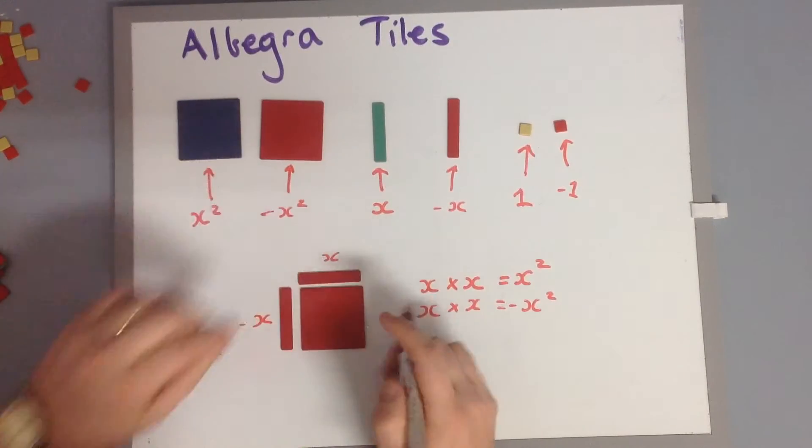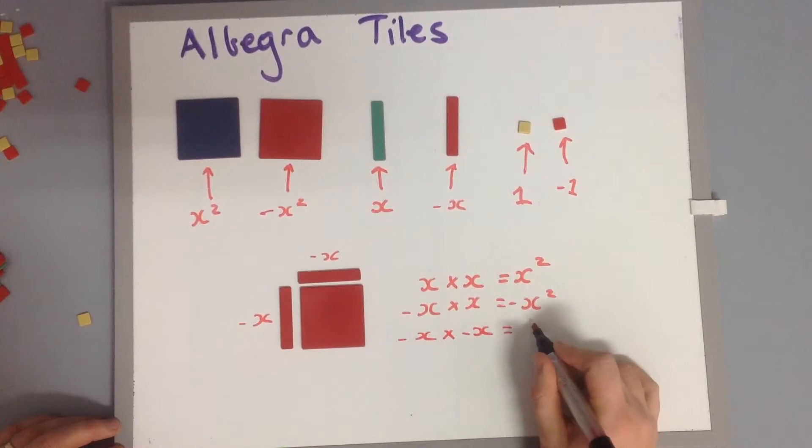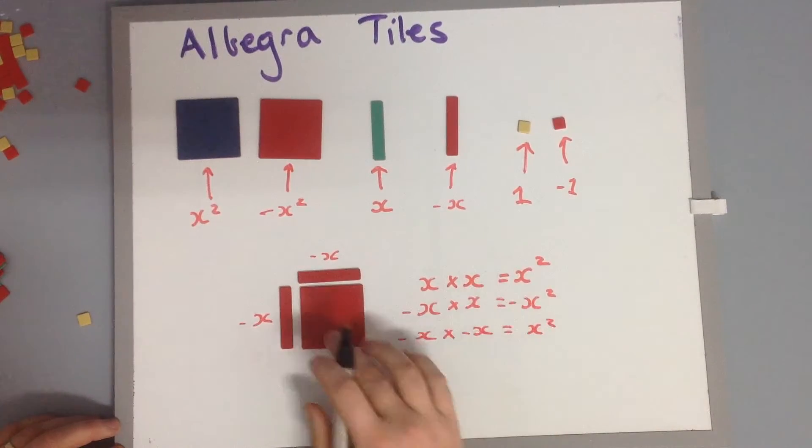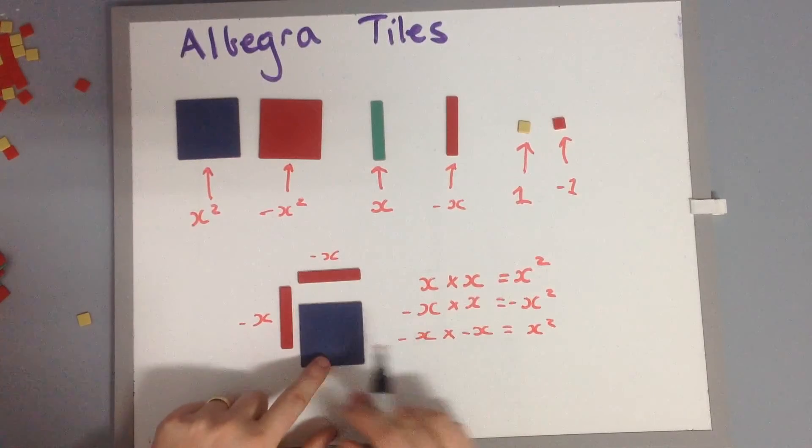If I flip this one over as well, now they're both negative. So this time we've got negative x times negative x. We know x times x is x squared, and a negative times a negative...